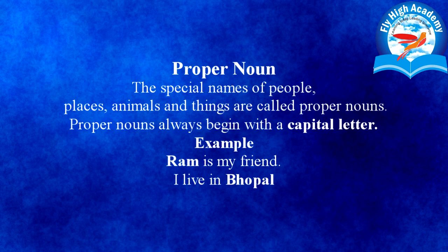First is proper noun. The special names of people, place, animal and things are called proper noun. Proper noun always begins with a capital letter. किसी भी specific name होता है उसे proper noun बोला जाता है। For example, 'Ram is my friend' — Ram किसी specific व्यक्ति का नाम है, इसलिए वो proper noun है। 'I live in Bhopal' — Bhopal एक specific नाम है, इसलिए उसको हम proper noun बोलेंगे।